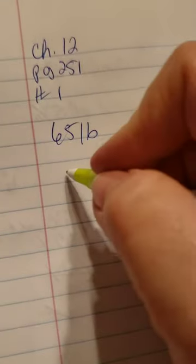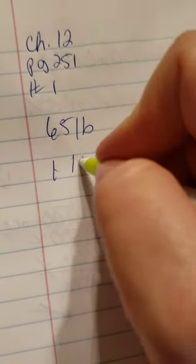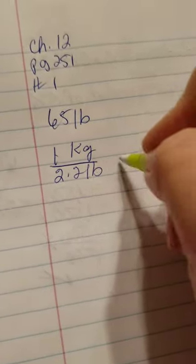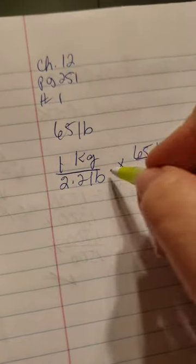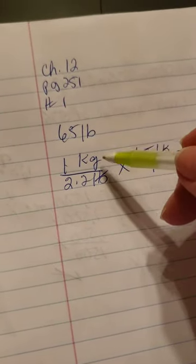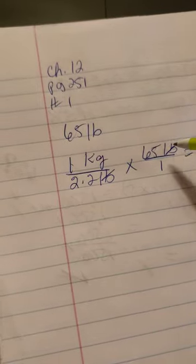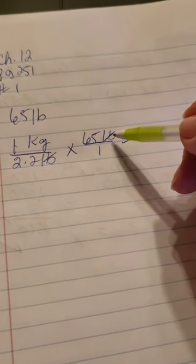If they're 65 pounds, we know that one kilogram is 2.2 pounds. The pounds are going to cancel. We'll put one kilogram over the 2.2 pounds and multiply it by our 65 pounds.